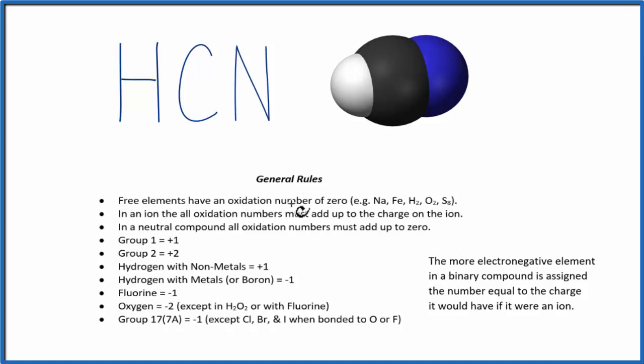We'll use these general rules and a special rule to figure out the oxidation numbers. As we go down, we can see hydrogen, when it's with a non-metal, has an oxidation number of plus one. So the hydrogen is going to be plus one.